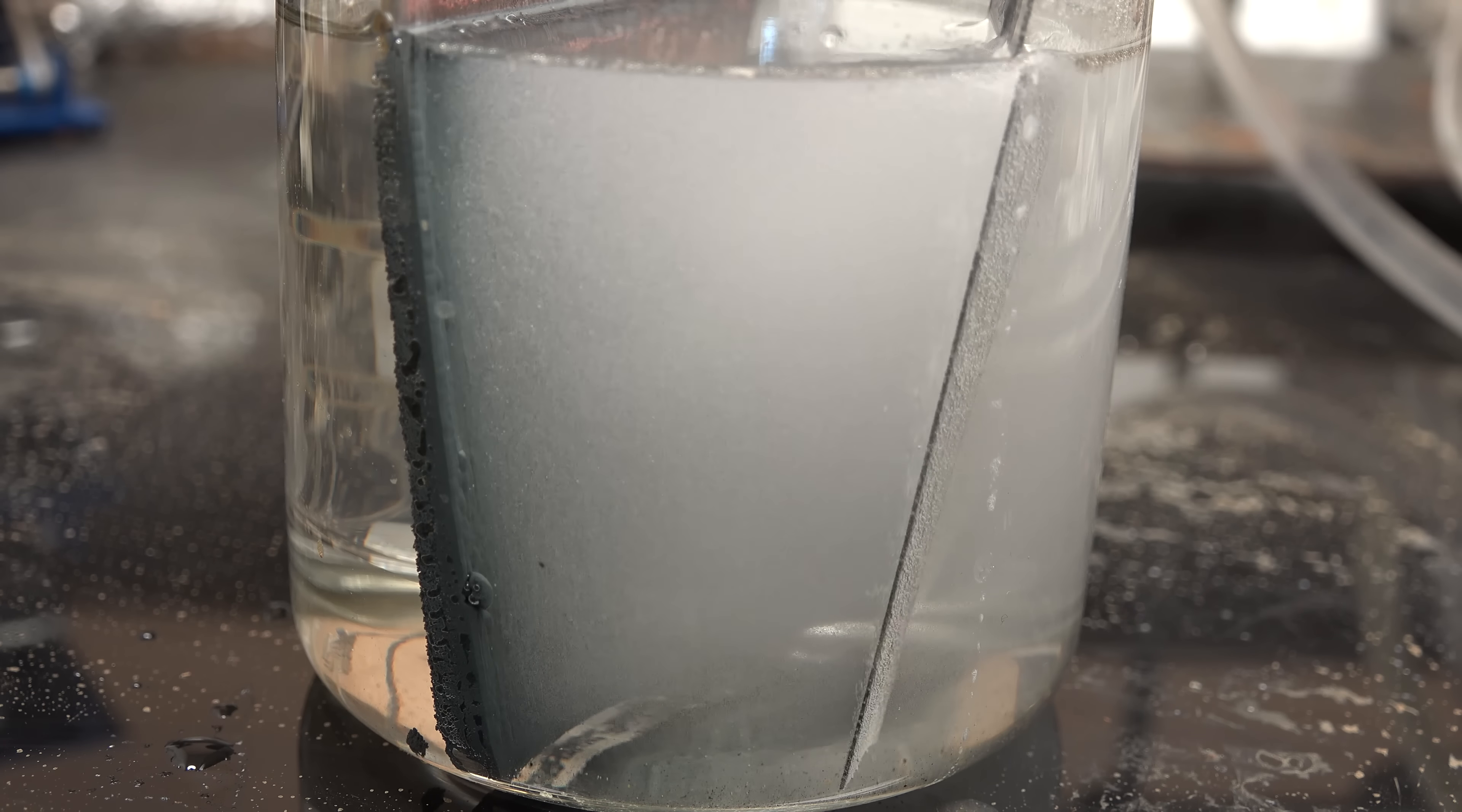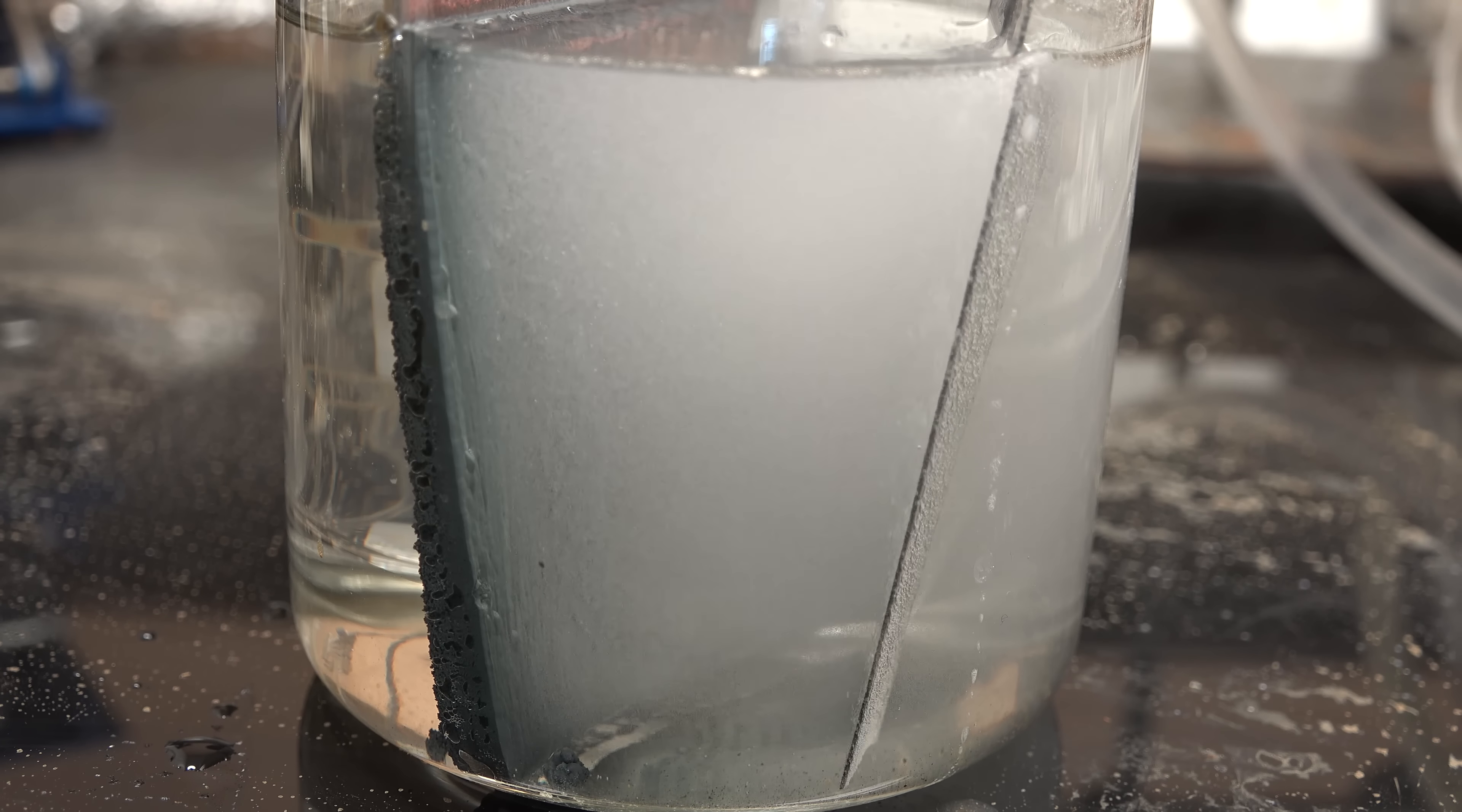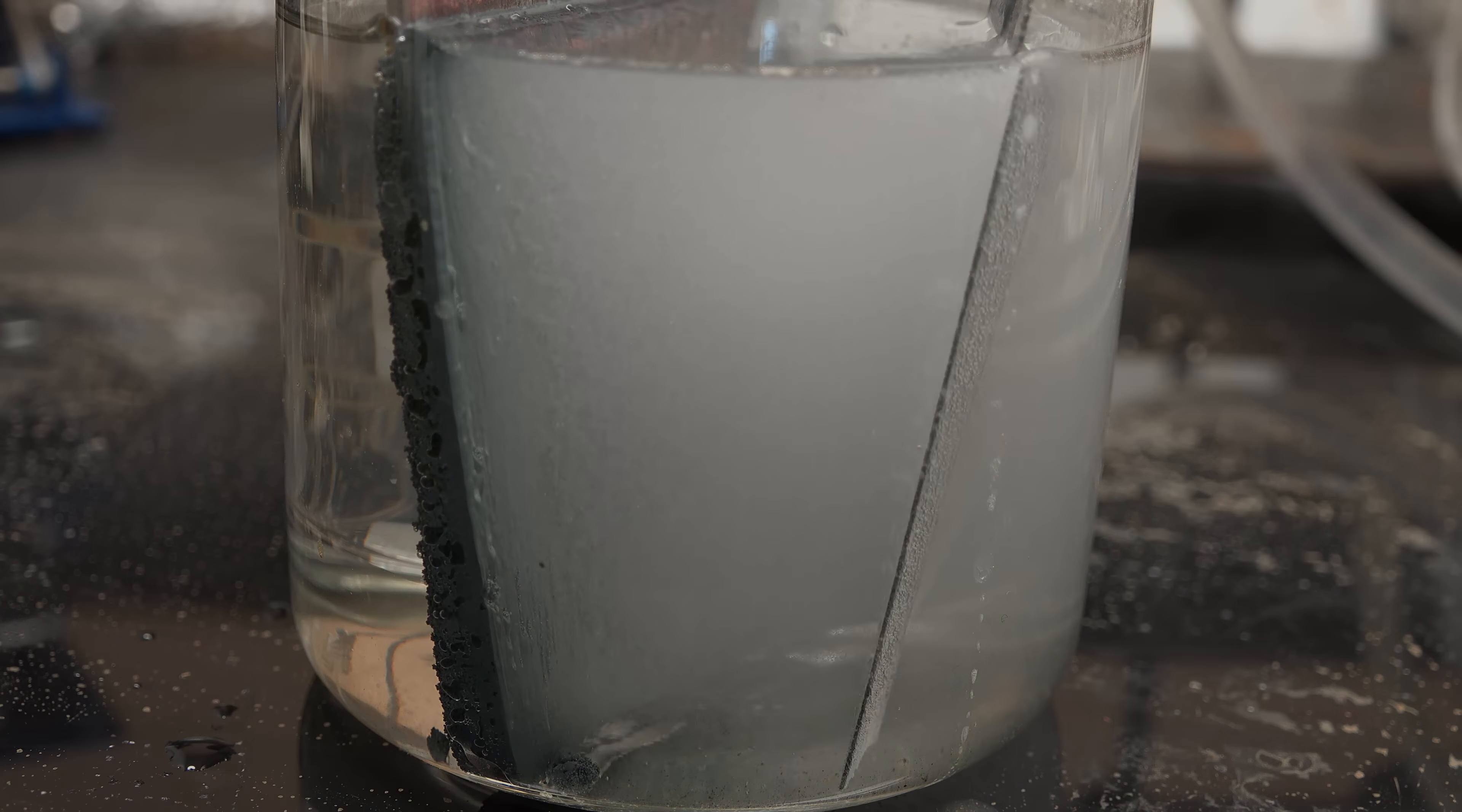Now if you look at the zinc surface you'll notice it has a somewhat sandy texture to it. The crystals of zinc metal produced in this process don't bond very strongly so rather than a metal plate we're getting more of a metal sponge that will crumble when we recover it. Anyway I'm going to let this go overnight.